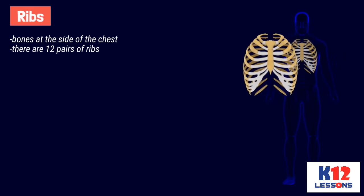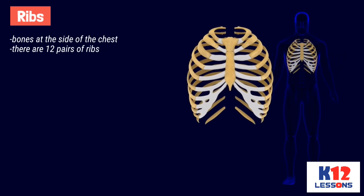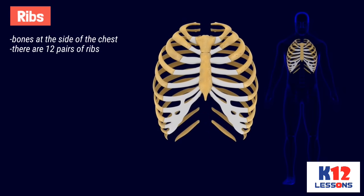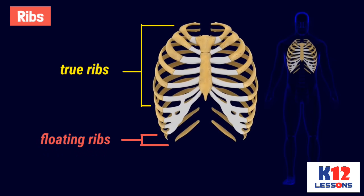Ribs are the bones at the side of the chest. There are 12 pairs of ribs. The upper seven pairs are called true ribs because they are connected to the breastbone, and the last two pairs are not connected. These ribs are called floating ribs.